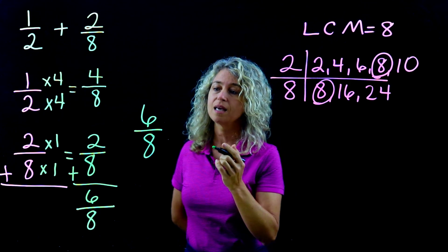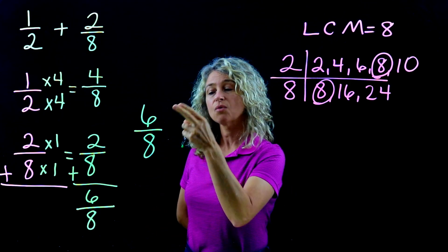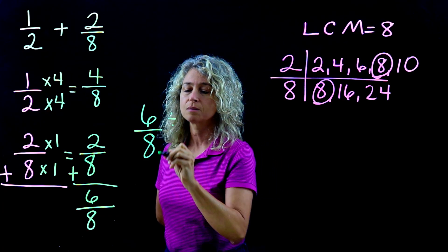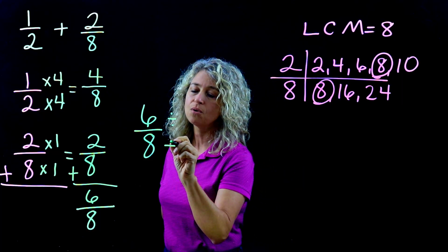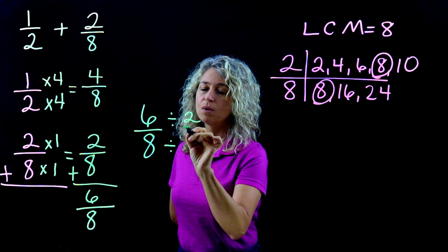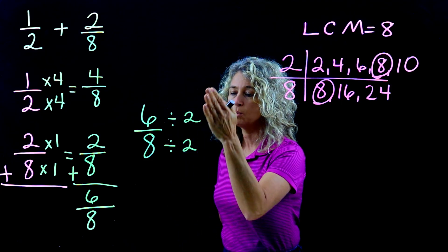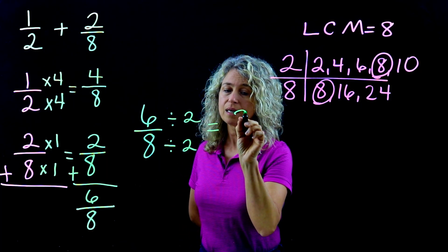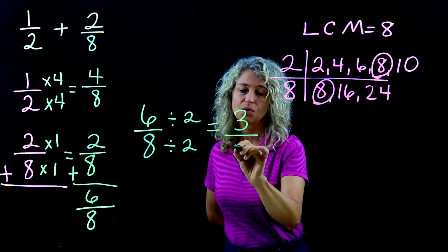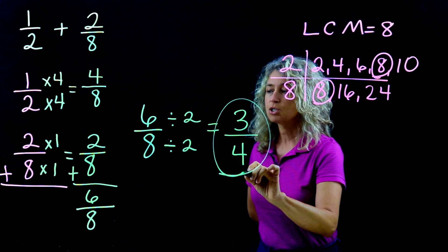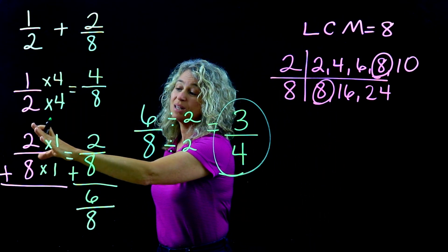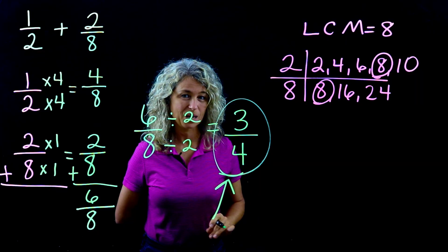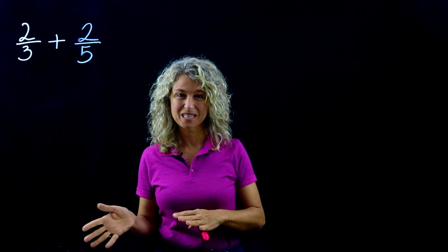6/8 is not simplified, so you need to find the greatest factor that can divide both numbers evenly — that number is 2. Whatever you do to the top, do the same to the bottom: 6 divided by 2 equals 3, and 8 divided by 2 equals 4. So the problem 1/2 plus 2/8 equals 3/4. Let's look at another example.